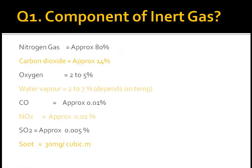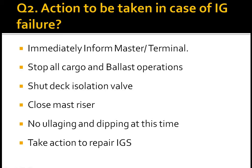First question: components of inert gas. Nitrogen approximately 80%, carbon dioxide approximately 14%, oxygen 2 to 5%, water vapor 2 to 7% depending on temperature, carbon monoxide approximately 0.01%, nitrogen oxide approximately 0.02%, and soot 30 mg per cubic meter.